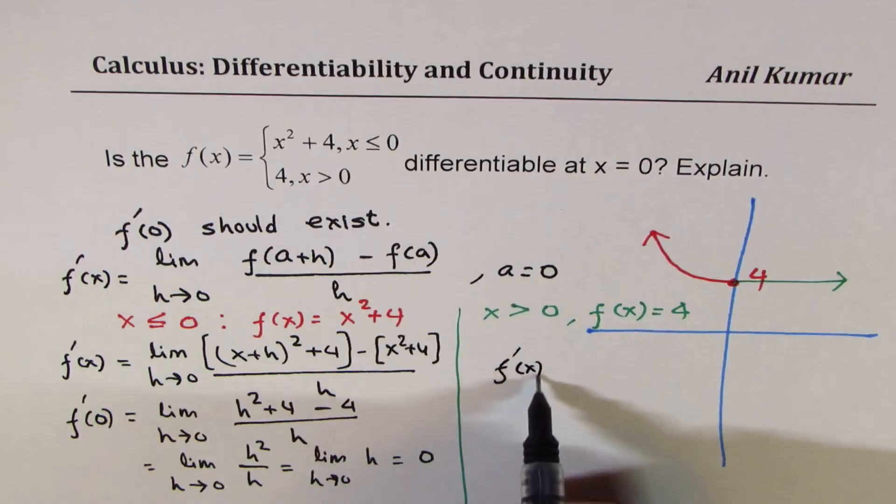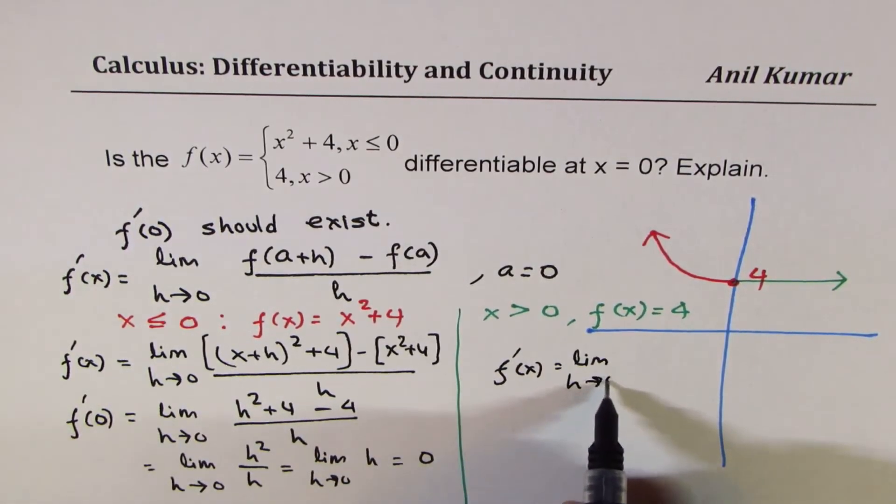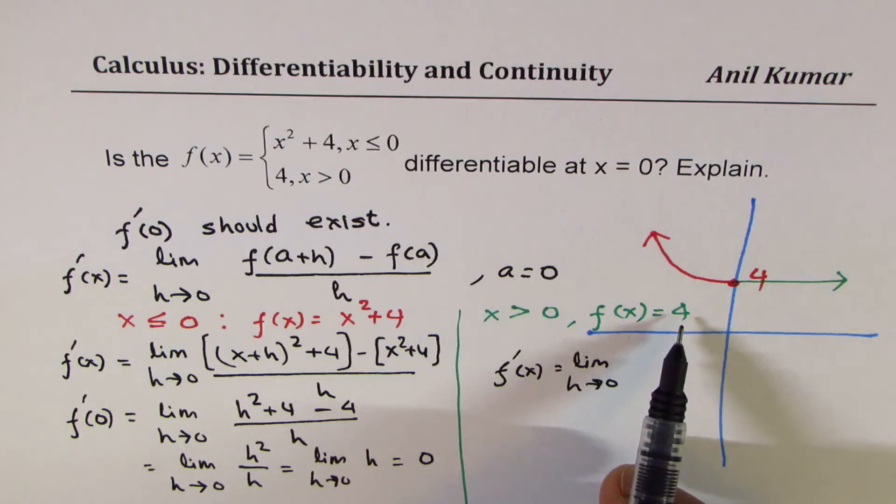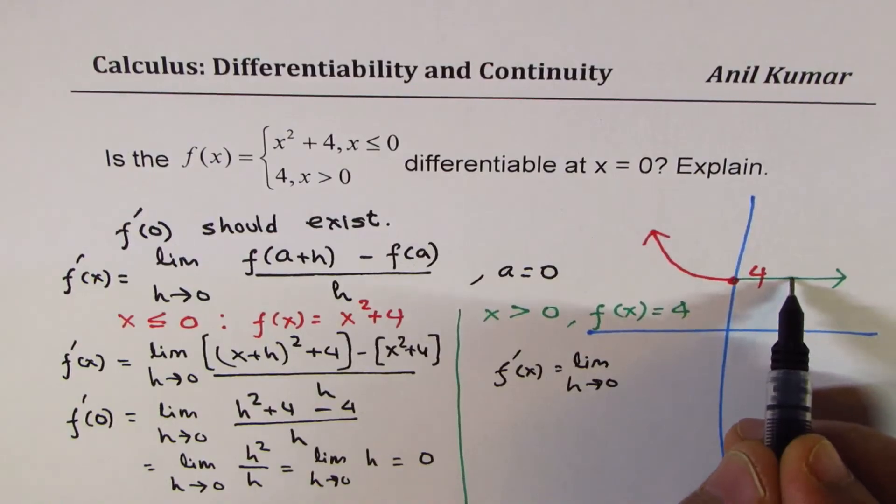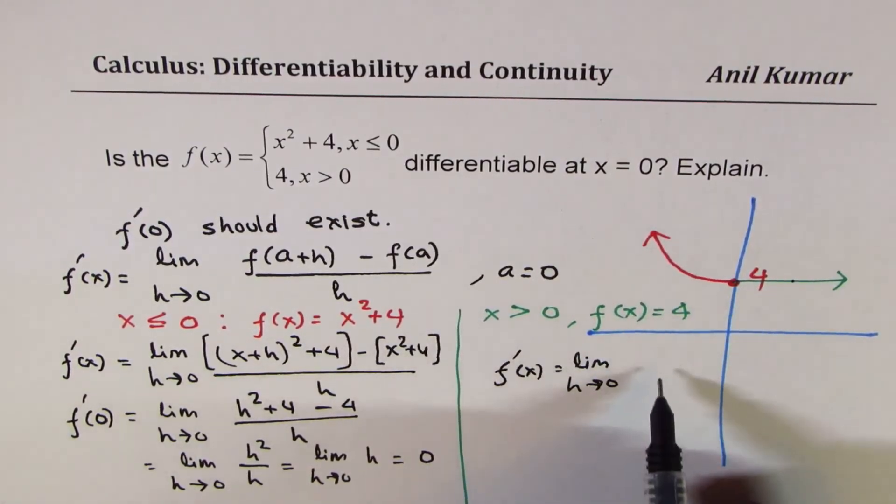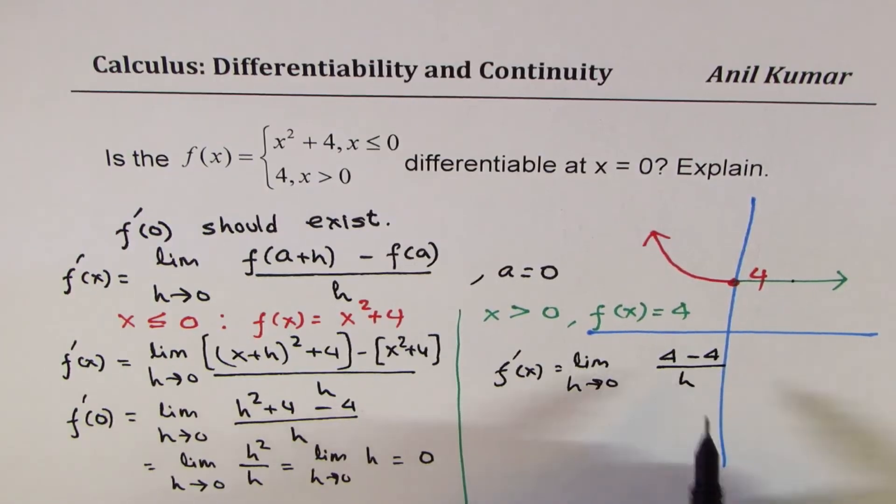what do we get? So the limit h approaches 0. Now, the function is 4, right? So there is no x in it. Both, if you take two points here, they are just 4, right? So it is 4 - 4 over h, right?